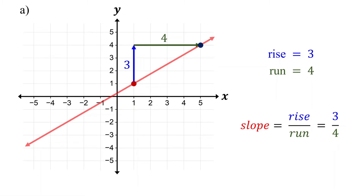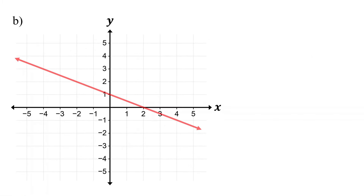Now, let's look at a line with a negative slope. First, locate two points on the line with integer coordinates. Next, find the rise. Starting at the point on the left, move down one unit. Note that moving up gives a positive rise, and moving down gives a negative rise. So, since you move down one unit, the rise is negative one.